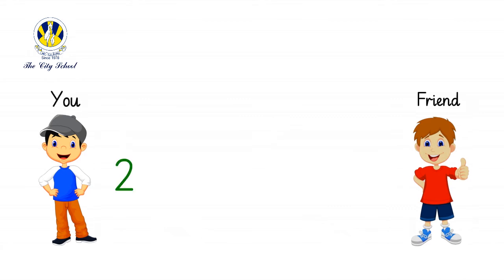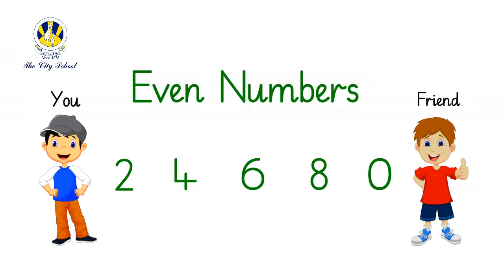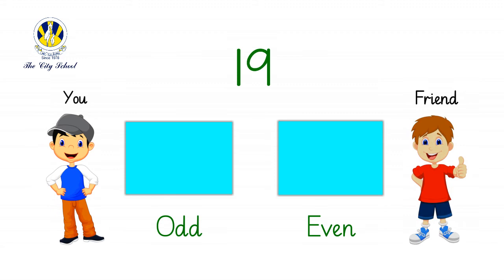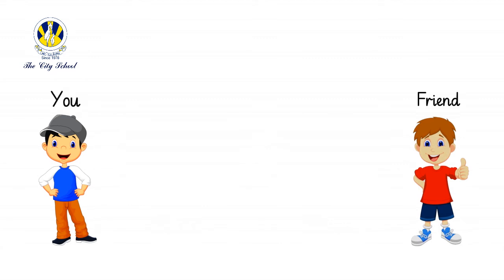The numbers ending with 2, 4, 6, 8, and 0 are even numbers. What about number 19 — is it an odd number or an even number? Superb! 19 is an odd number, as numbers which end with 1, 3, 5, 7, and 9 are odd numbers.